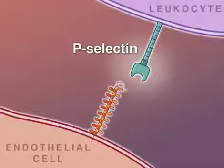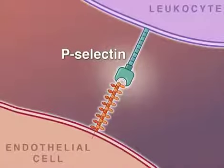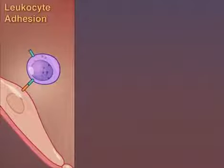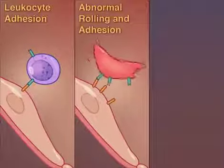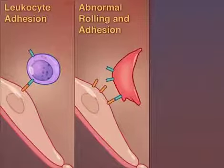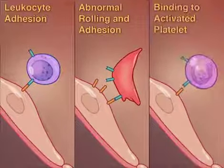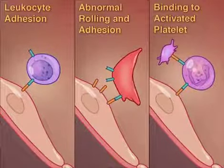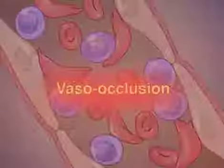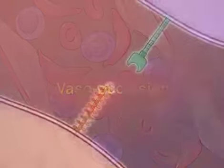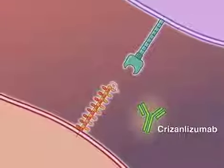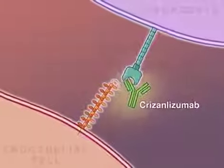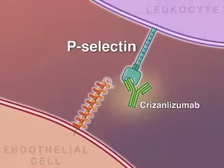P-selectin functions as a cell adhesion molecule that initiates leukocyte adhesion, mediates abnormal rolling and adhesion of sickled erythrocytes, and binds neutrophils to activated platelets, all contributing to vaso-occlusion. Crizanlizumab is a humanized monoclonal antibody that blocks binding to P-selectin.